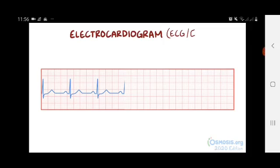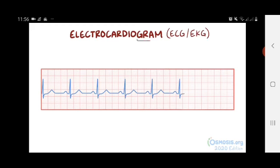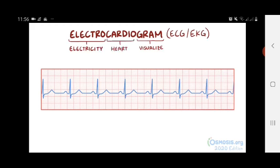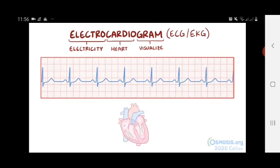An electrocardiogram, or ECG, or the Dutch or German version of the word EKG, is a tool used to visualize the electricity that flows through the heart. An ECG tracing specifically shows how the depolarization wave moves during each heartbeat, which is a wave of positive charge.